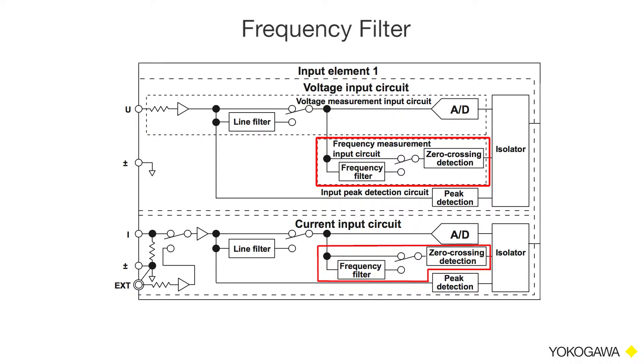This is also a key advantage of using a power analyzer instead of an oscilloscope to make power measurements. The frequency filter acts as a filter for detecting the zero crossing of the synchronization source more accurately.